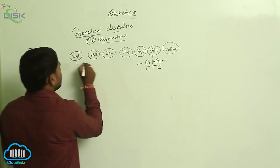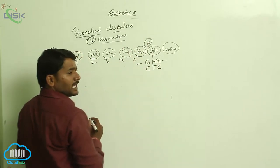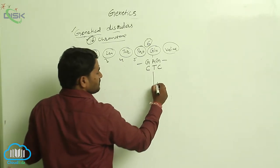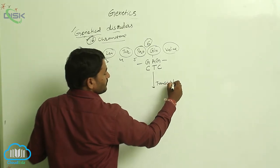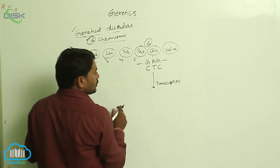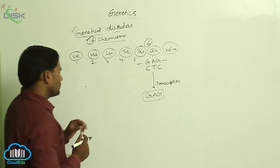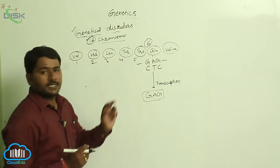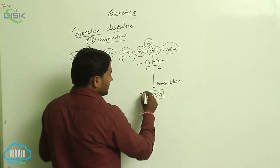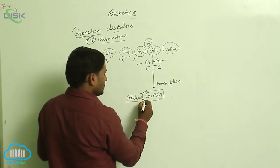In the sixth position of the beta polypeptide chain, glutamic acid is present. When transcription takes place, it is complemented again by GAG on the mRNA. So GAG indicates glutamic acid.